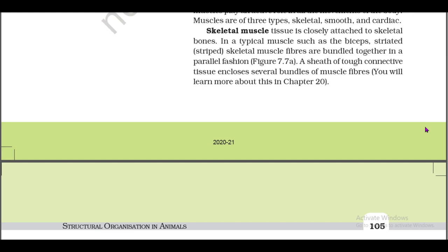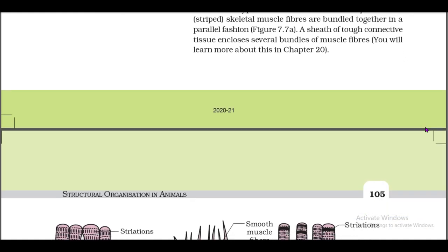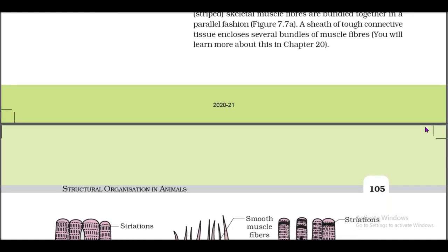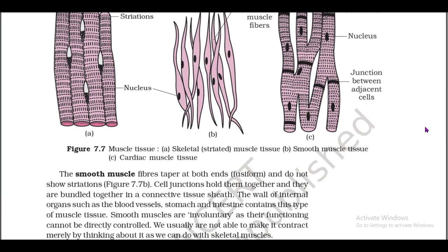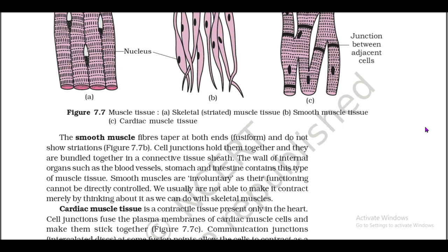Skeletal muscle tissue is closely attached to skeletal bones. In a typical muscle such as the biceps, striated skeletal muscle fibers are bundled together in a parallel fashion (figure 7.7a). A sheath of tough connective tissue encloses several bundles of muscle fibers. The smooth muscle fibers taper at both ends (fusiform) and do not show striation (figure 7.7b).